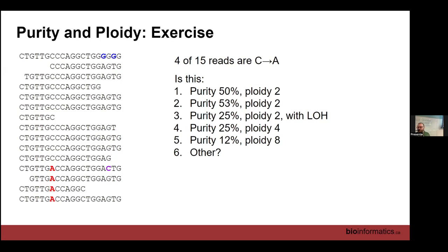Getting back to purity and ploidy for a moment — I have a little exercise here for you to discuss at each table. I have a stack of reads similar to the ones Larry was showing earlier. Reads end at various points and have different positioning in the stack, giving a ragged edge. These are much shorter than normal paired-end reads — about 20 bases instead of 150 — but they serve for illustration. There are a few discrepancies: one G changed to a C, a couple of A's changed to G's. But the thing that interests us is a stack of four red A's.